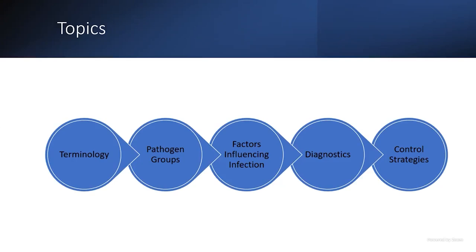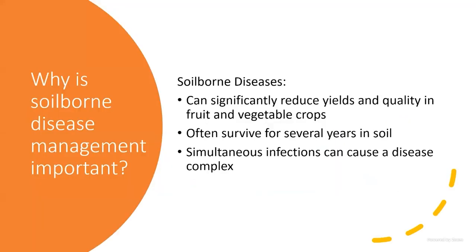Why are we talking about soil-borne diseases? They can significantly reduce yields and quality in fruit and vegetable crops. I threw fruit in there because a lot of the fruits we manage — for instance, strawberries — we treat basically like an annual vegetable. They often survive for several years in the soil, and that's what makes them so hard to control. It's not just a quick fix, something we can spray and get on a two-week rotation like we do for a lot of other diseases.